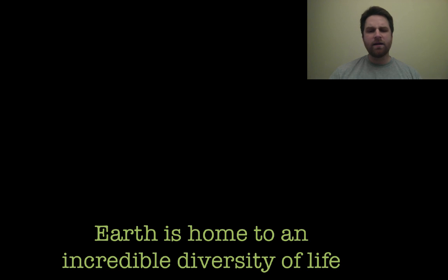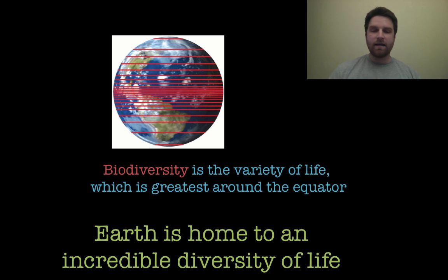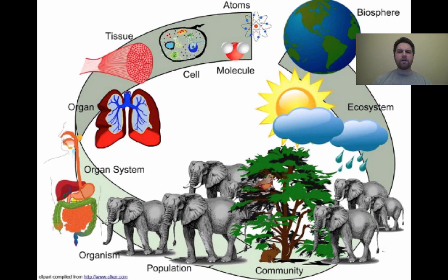As a conclusion: Earth is home to an incredible diversity of life. The biosphere includes all living things and the places that they are found. Biodiversity is the variety of life, and it is greatest around the equator, getting less and less as you go towards the poles. There is also an organization starting at atoms — the smallest units — which come together to make molecules, then cells, then tissues, and so on all the way up to everything that makes up our biosphere.